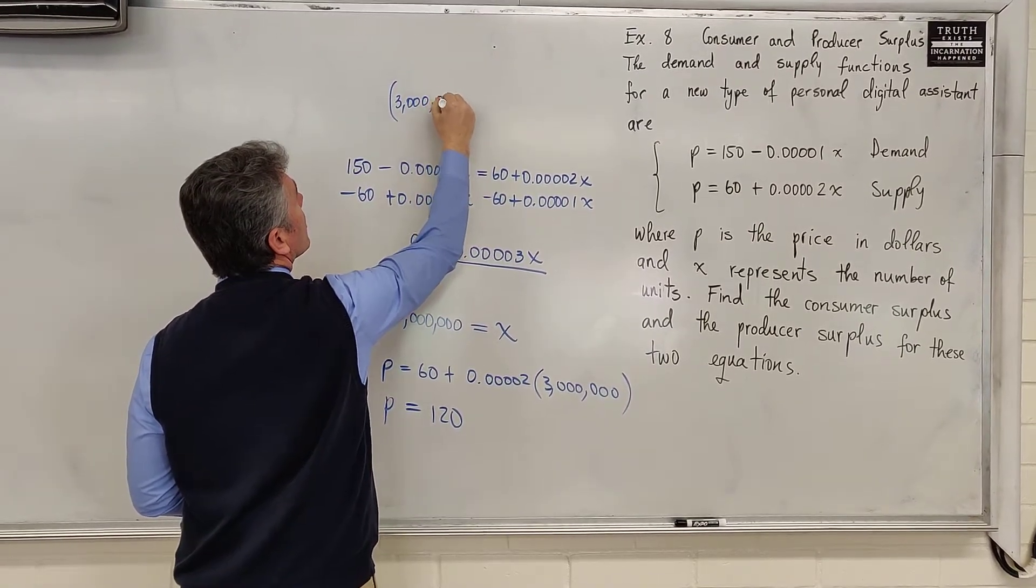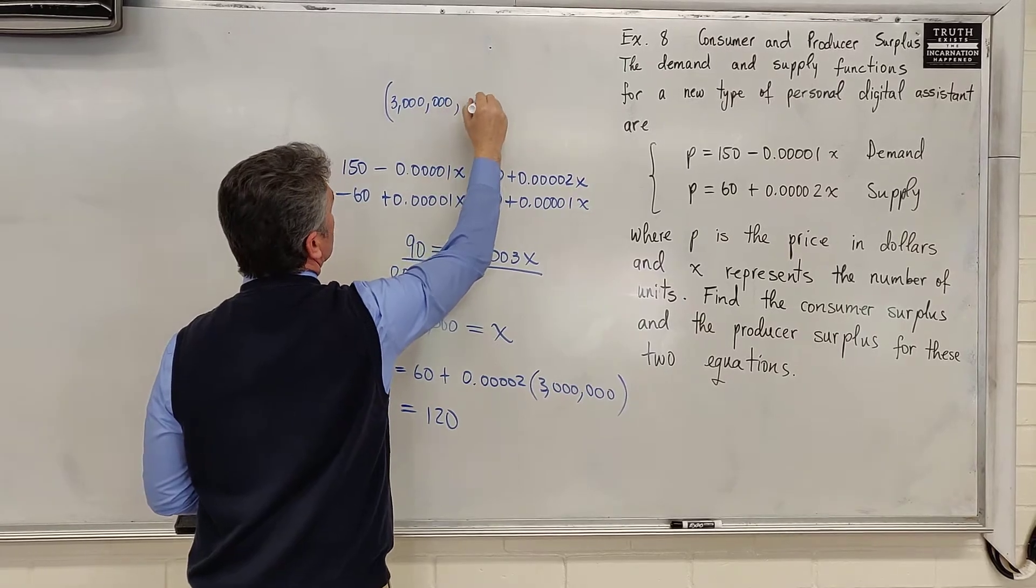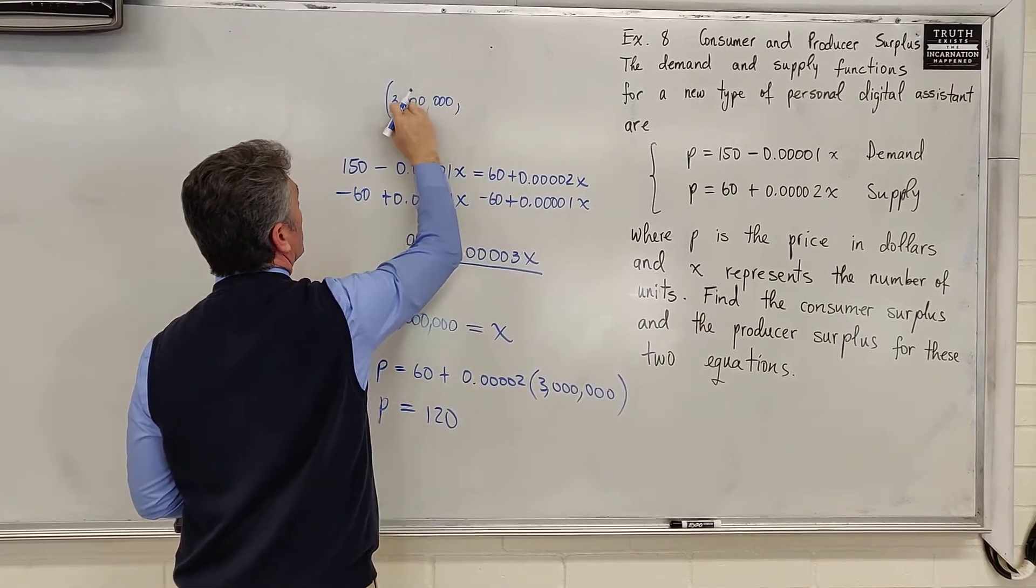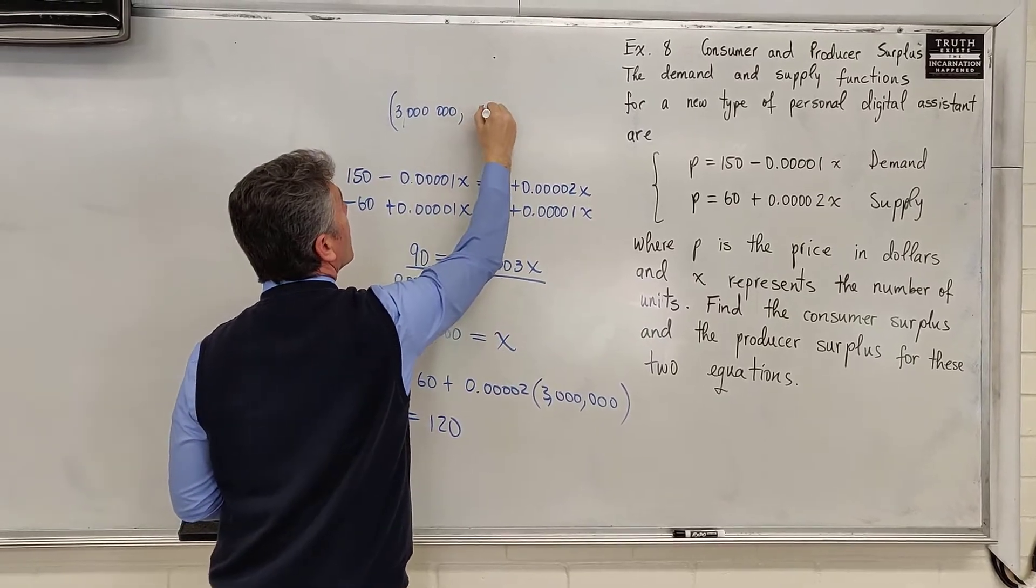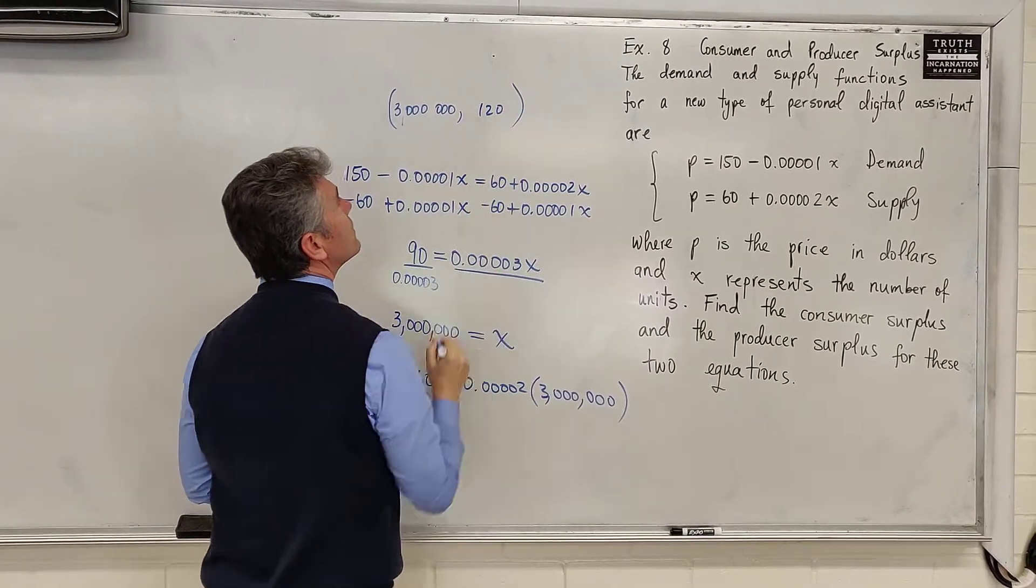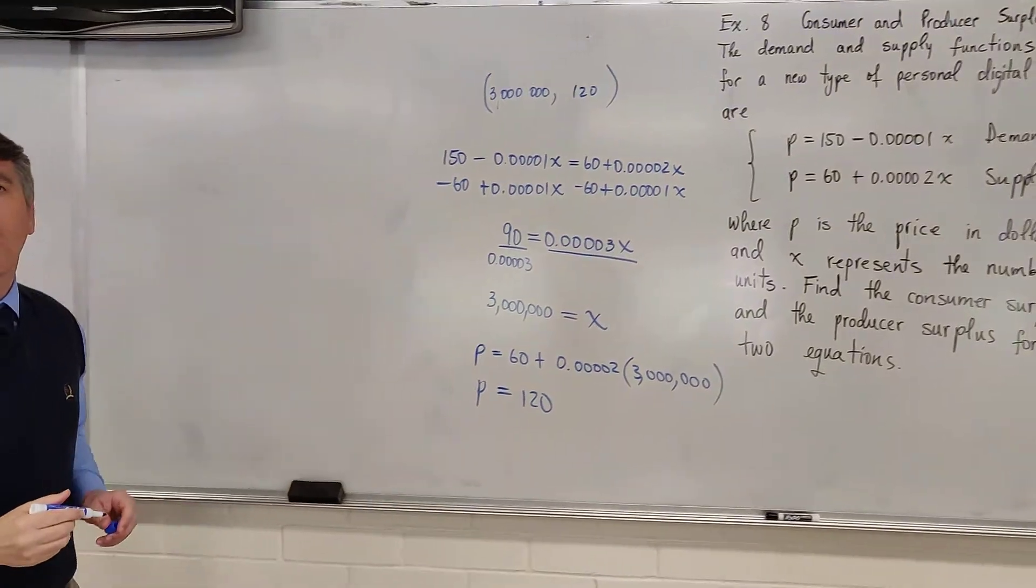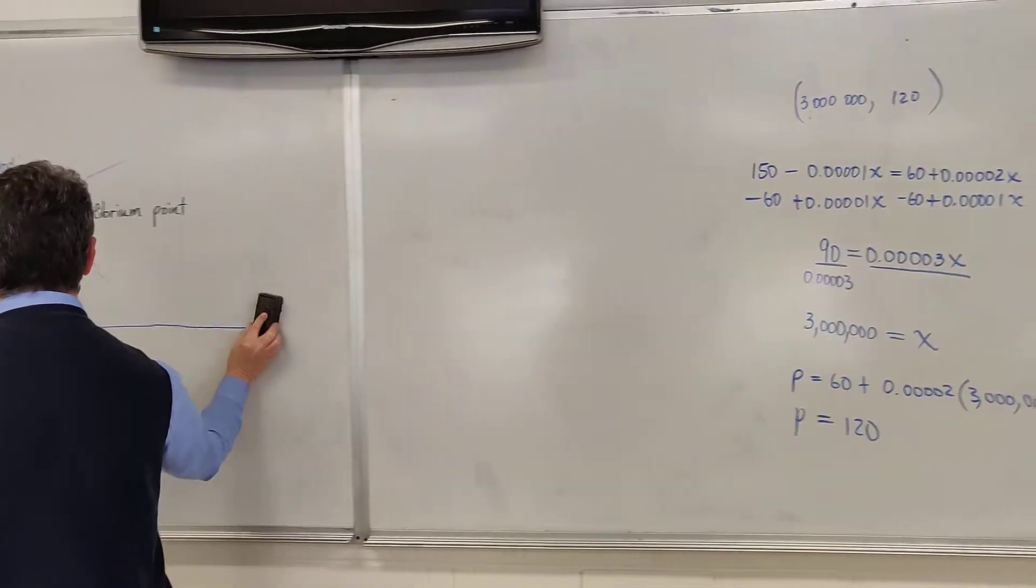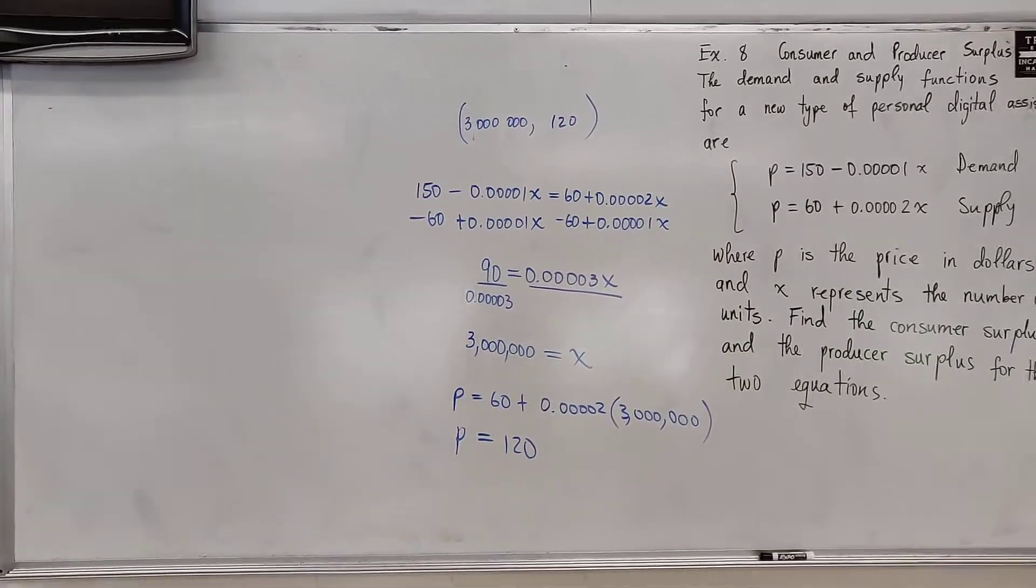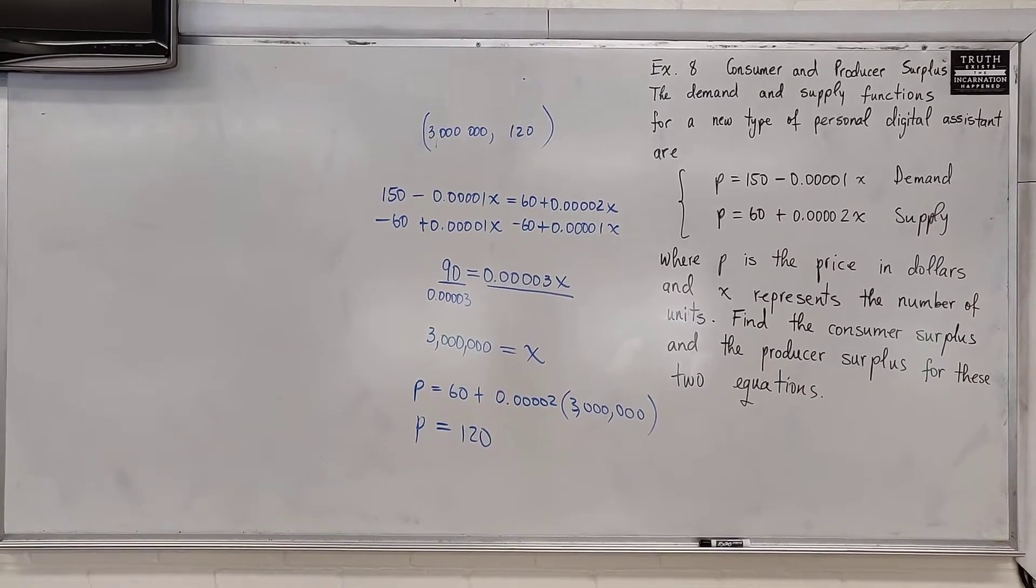3 million, 120. This is our equilibrium point. The next thing we're going to do is graph the two equations.